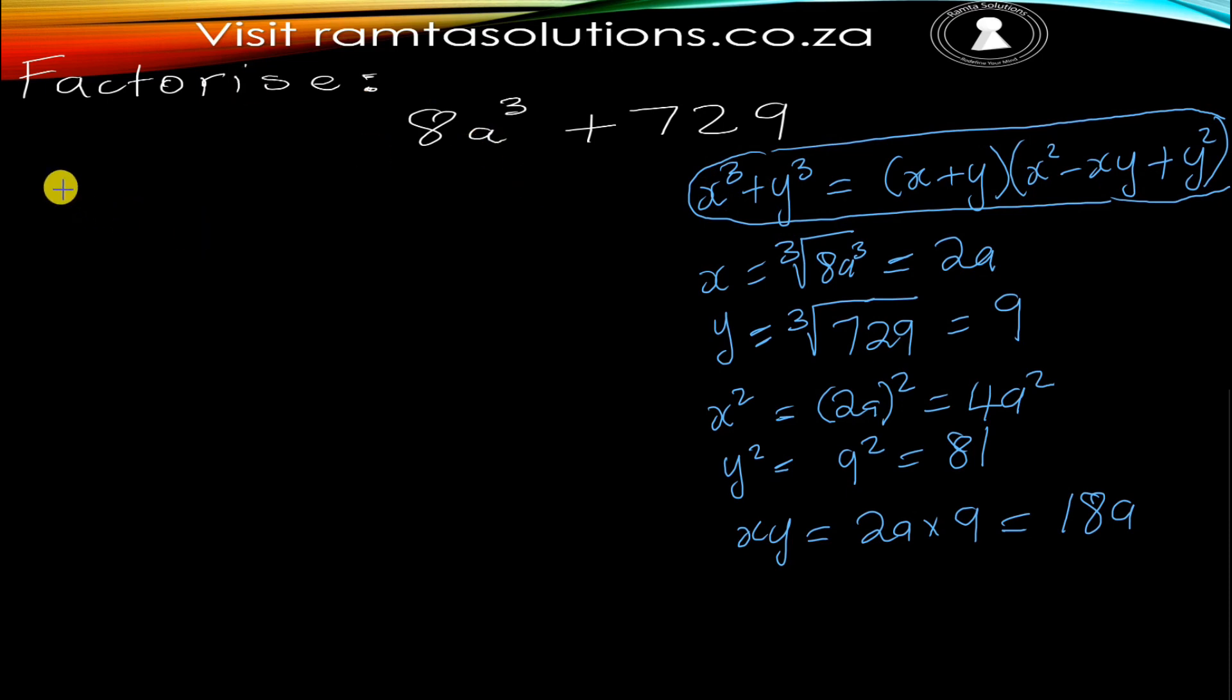Now coming back to factorize this, let me write it here. 8a cubed plus 729 would be: first thing first, what is x? We said x was 2a. What is y? We said y was 9. What is x squared? We said it was 4a squared minus, what is xy? It was 18a. And then what is y squared? It was 81.